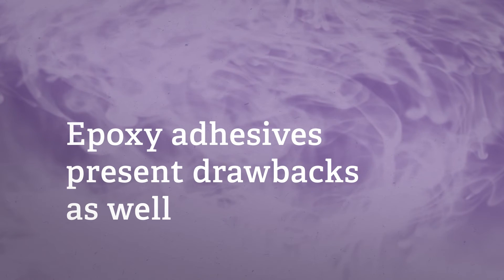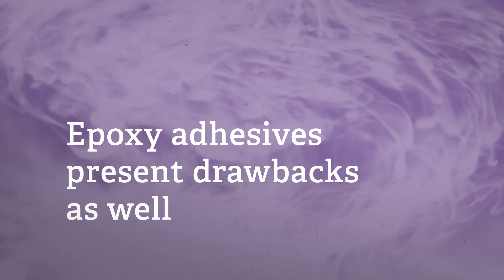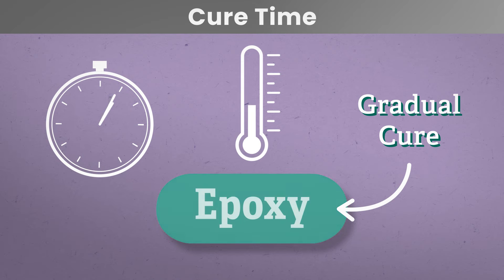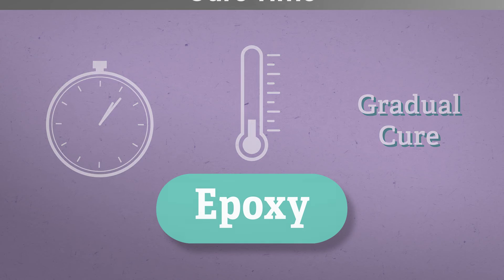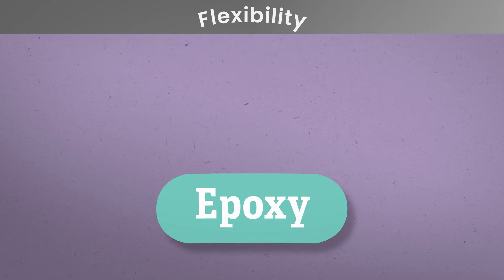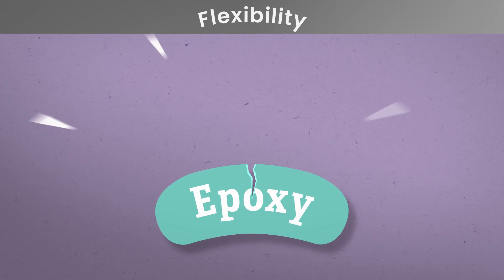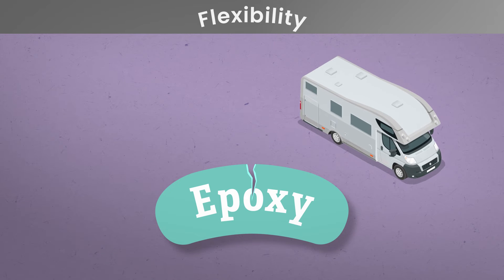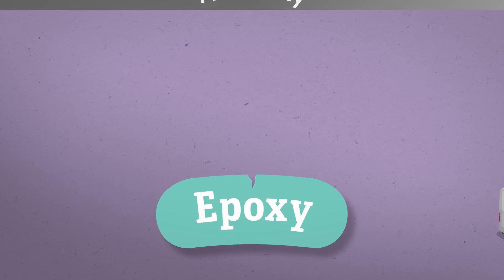Epoxy adhesives present drawbacks as well. Cure time is usually gradual and can be affected by temperature. The lower the temperature, the slower the cure will be, meaning it can take a few days before reaching full cure. Most epoxies will be brittle. This lack of flexibility is a problem when bonding something that is likely to vibrate or move.